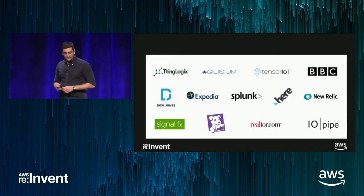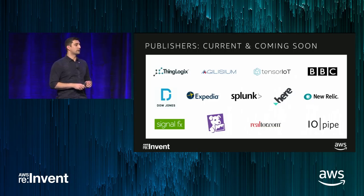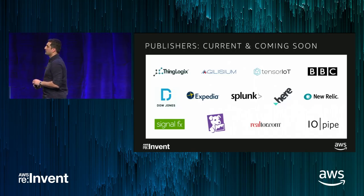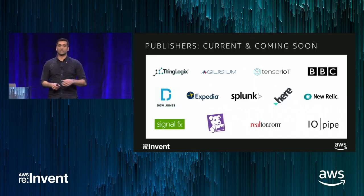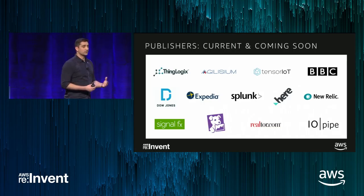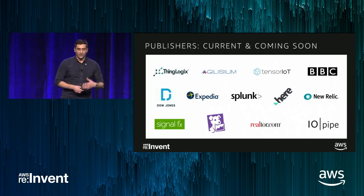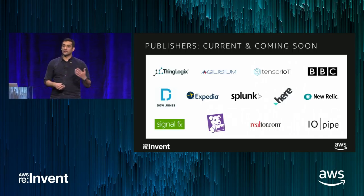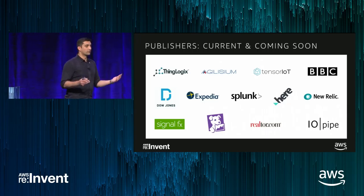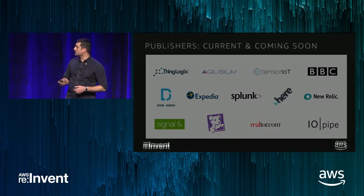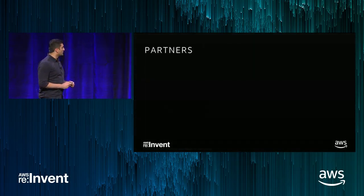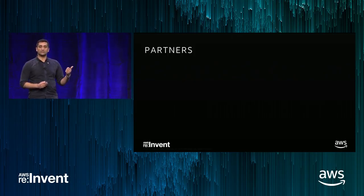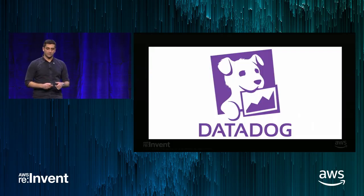What I want to talk about next is who is contributing and how partners and our ecosystem are excited about what we're doing here. Daniel and Michael will talk about their specific areas and how they've contributed to the serverless application repository as public applications. We have partners like Tensor IoT, Splunk, Agilism, BBC, SignalFX, Datadog, and HERE who have already contributed or will actively contribute to this ecosystem before the end of the year. Let me introduce Daniel, who is from Datadog — he's a product manager there, and will describe how Datadog has used this repository to get closer to their customers on AWS.